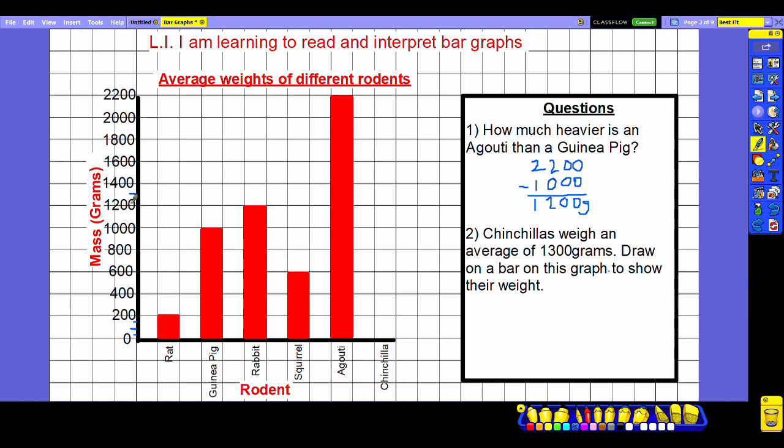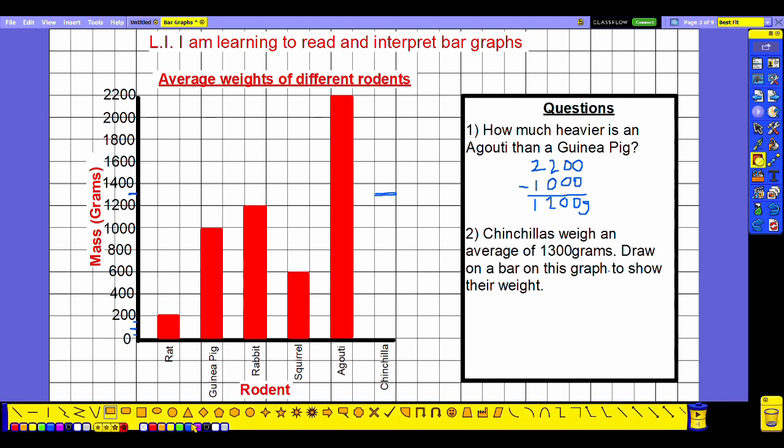Using my ruler I would make sure that I'm keeping a straight line all the way along the graph to then mark the correct location on the bar graph. Then lastly quite simply I fill in the bar graph to the correct height and there we go, we've now shown the chinchillas weigh 1300 grams.